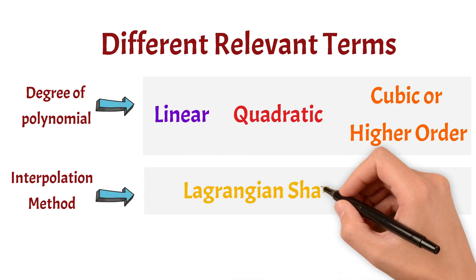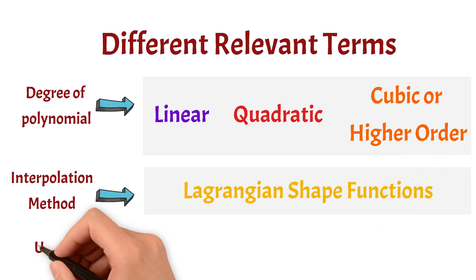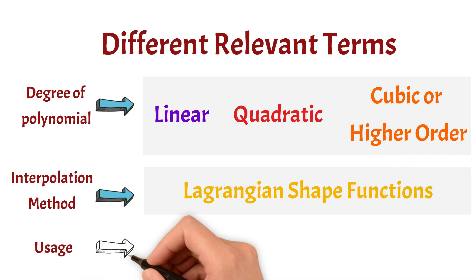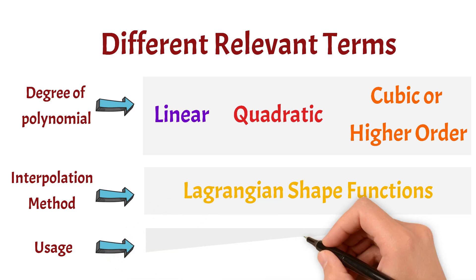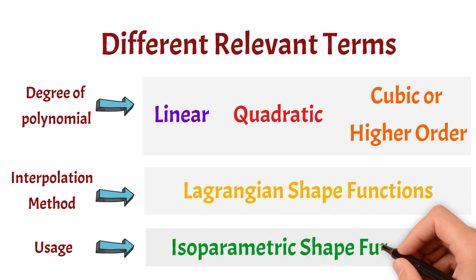Finally, the usage of these shape functions. You will often see something called isoparametric shape functions when dealing with finite element analysis. This just means we use the same shape functions for both geometry and field variable interpolation. We will explain each of these in more detail, so stay tuned for the next part of the video.